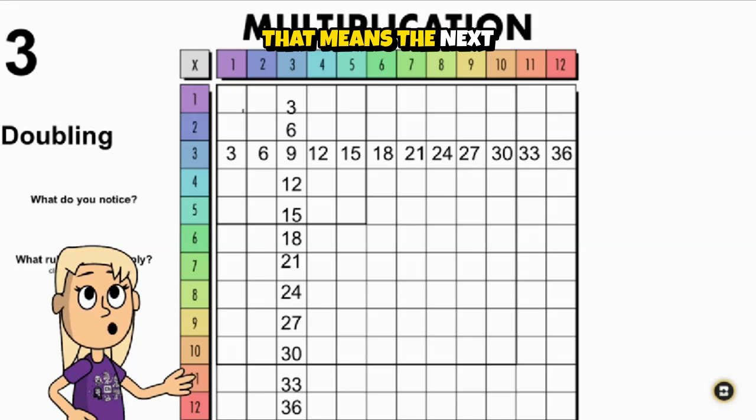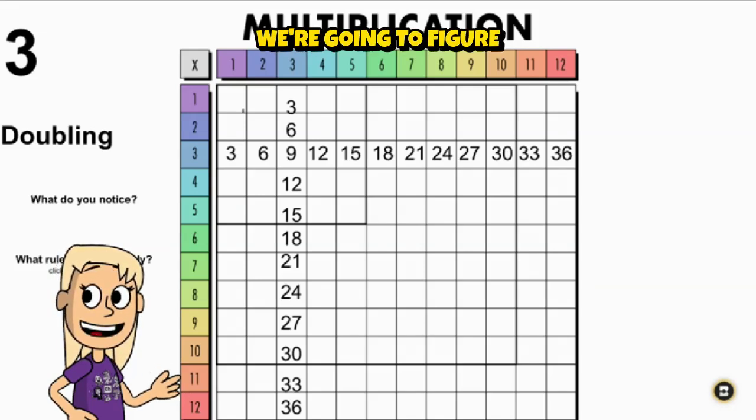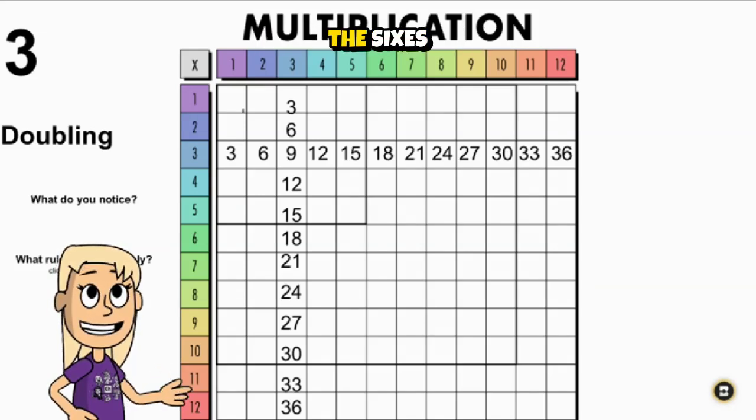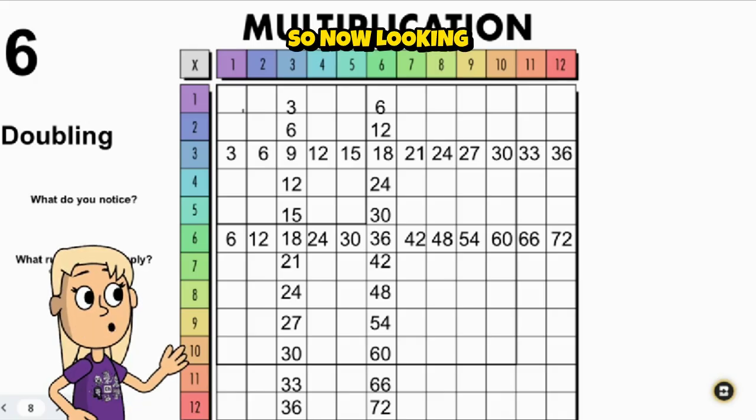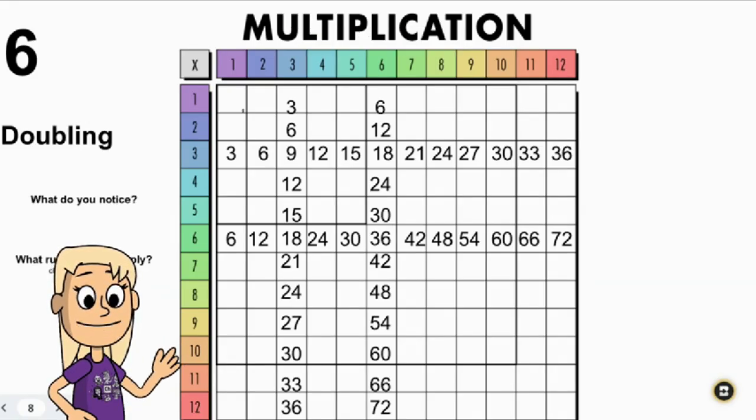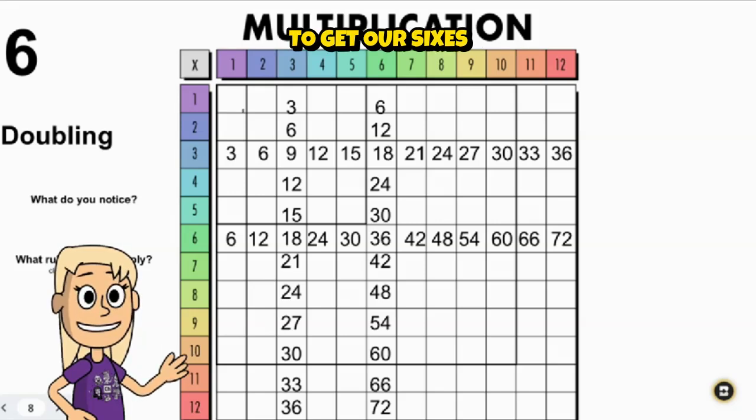That means the next set of numbers that we're going to figure out are going to be the sixes. So now looking at the threes, we doubled those to get our sixes.